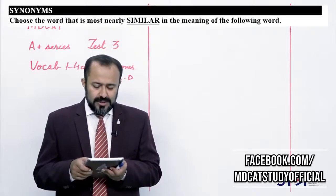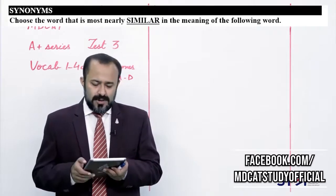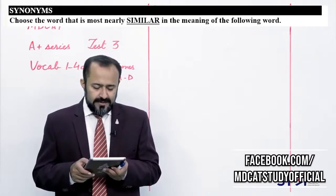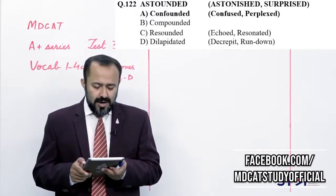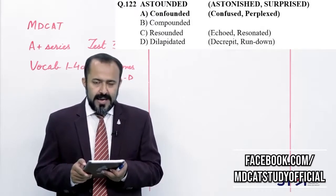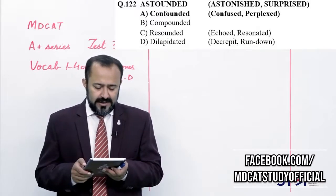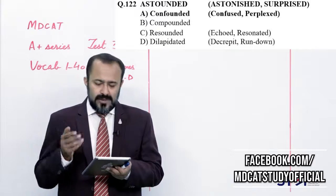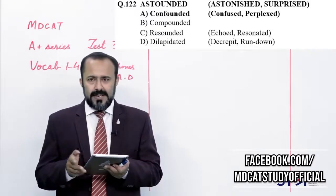Synonyms کے questions: astounded — حیران کیا ہوا۔ Alpha (confounded) — حیران شدہ، correct answer ہے۔ Compounded کسی جگہ میں اکٹھی ہوئی چیزیں — relate نہیں کر رہا۔ Resounded — گونجنے والی آواز۔ Dilapidated — تباہ شدہ۔ Alpha correct answer ہے۔